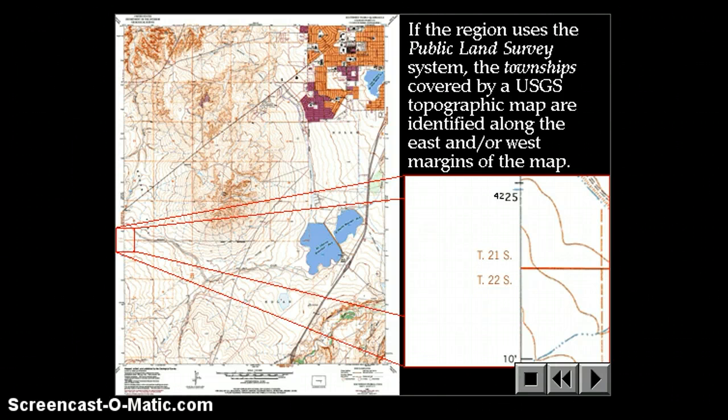On a topographic map, the public land survey coordinates are in red. So you'll see T number S or T number N, that's township, the township number, and then the direction either north or south of the baseline.